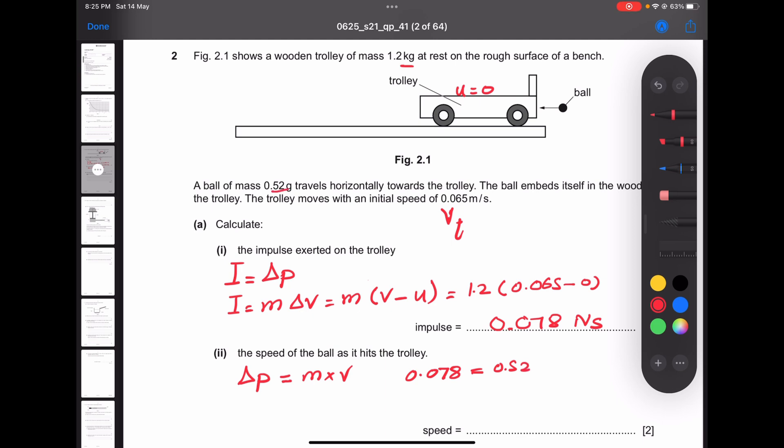To get v, just divide both sides by 0.52 times 10 to the power minus 3. The values cancel out, get the v. Use a calculator, correct answer 150 meter per second. So you get two marks.